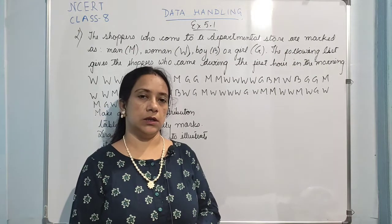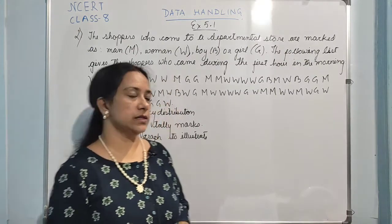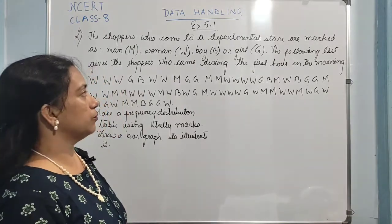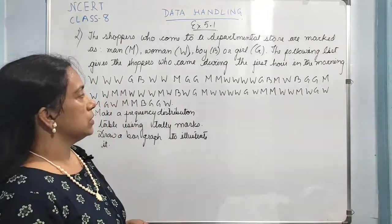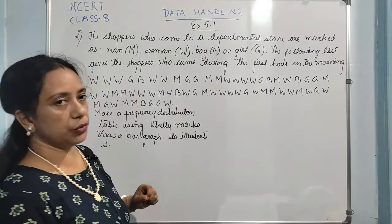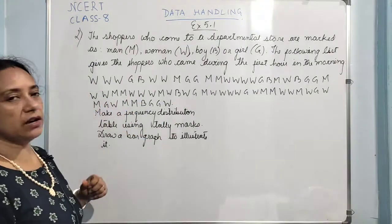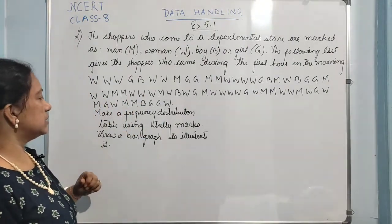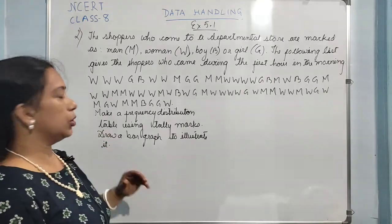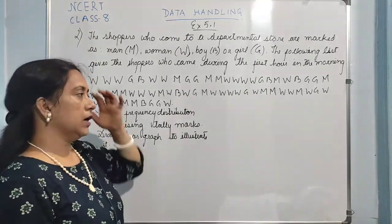Hello my dear students. In this video I will be discussing some questions from exercise 5.1. Here I have taken the second question, where we need to make a frequency distribution table using tally marks, and we also have to draw a bar graph to illustrate this.